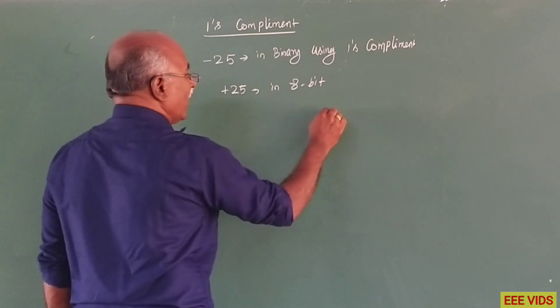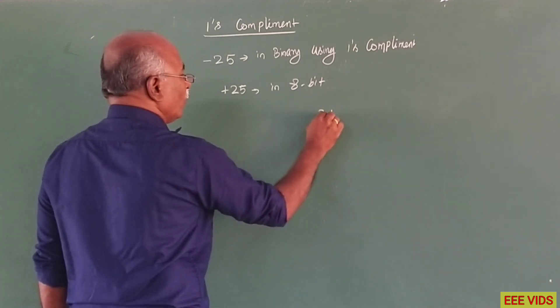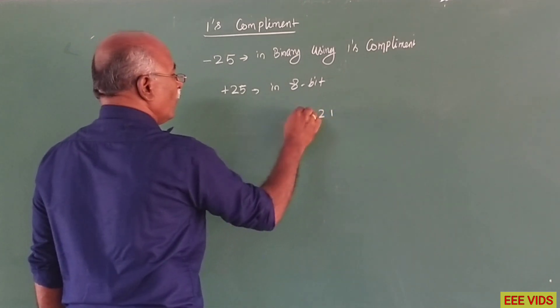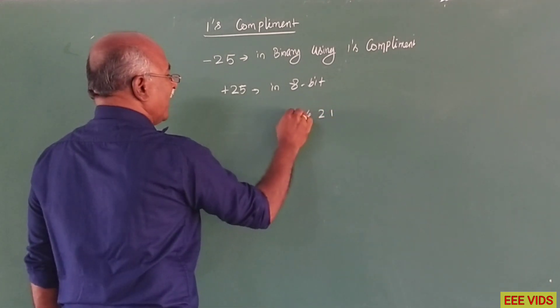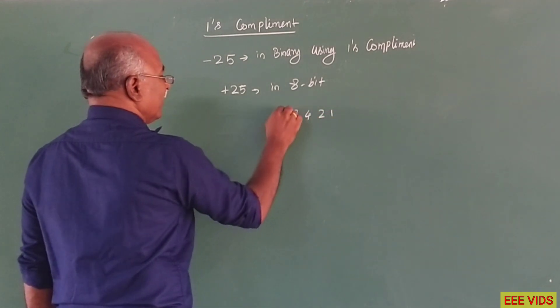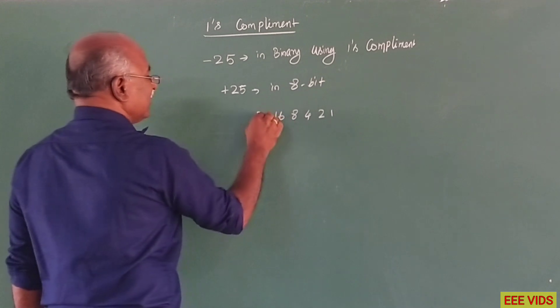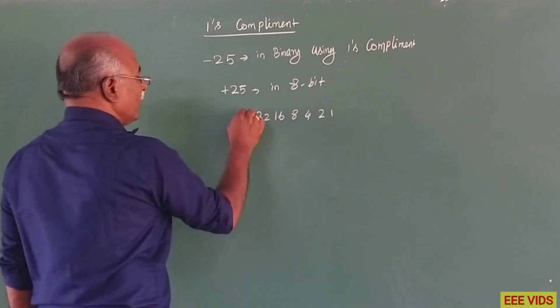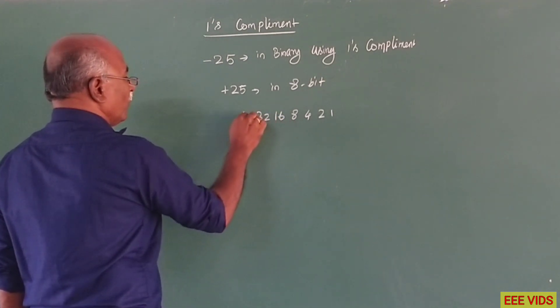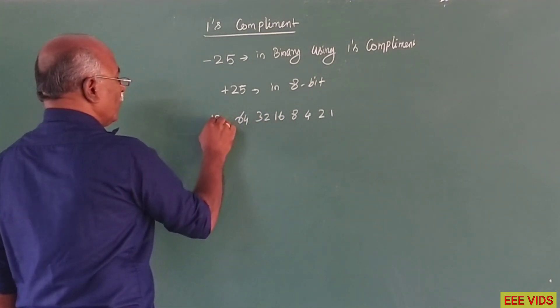So, the bit positions are: 1, 2, 4, 8, 16, 32, 64, 128.